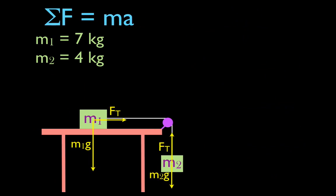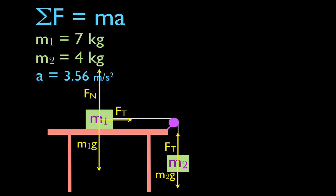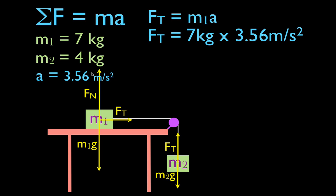We said we're also going to find the tension in the string, so now we'll do that. Once again we use Newton's second law, but this time we sum up the forces on each object individually and solve for the tension. For m1, the sum of the forces is just the tension force — that's the only force affecting the acceleration — and that equals m1 times its acceleration of 3.56 m/s², not 9.8. Plugging in: 7 times 3.56 gives a tension force of 24.9 Newtons.